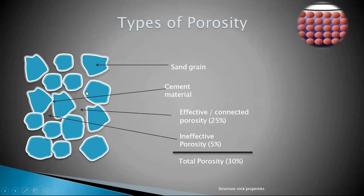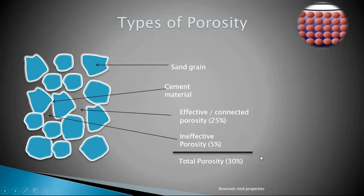Effective porosity is the one where all pores are connected with each other. Ineffective porosity is the blocked one — there may be oil inside but it cannot reach the surface because it is blocked with no space to come out. For example, if total porosity is 30 percent but 5 percent is blocked from all sides, that 5 percent is ineffective and useless unless we fracture it. What we are concerned with is the effective, connected porosity.